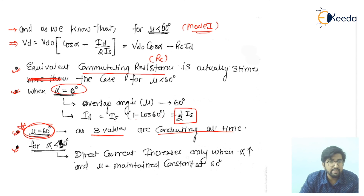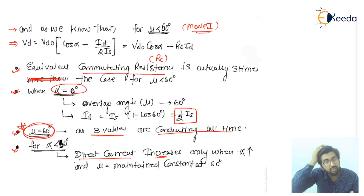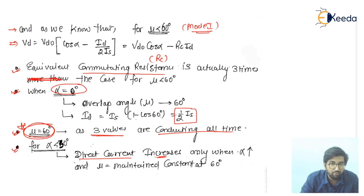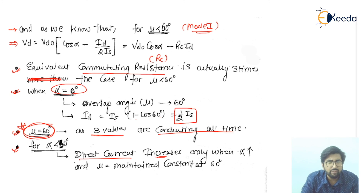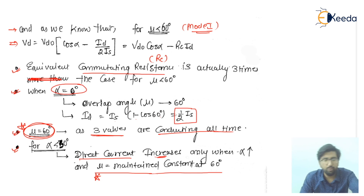If alpha is less than 30 degrees, the direct current increases only when alpha increases. For the commutation operation, alpha should be greater than 30 degrees. From previous lectures, one thing should be clear: the direct voltage is only obtained when alpha is greater than or equal to 30 degrees. If alpha is less than 30 degrees, the direct current increases only as alpha increases, and mu is maintained constant at 60 degrees.